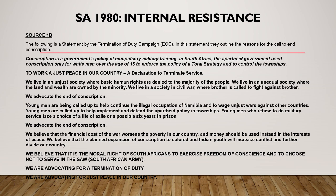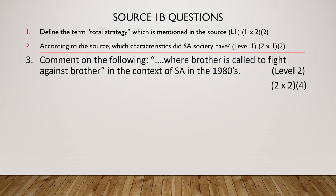Today we will be focusing on internal resistance. In front of you is Source 1B. It is important that you thoroughly read the source from beginning to end, ensuring that you understand exactly what you are reading. The source focuses on the ECC — the End Conscription Campaign. The questions that follow will be focused specifically on Source 1B. Question one: define the term 'total strategy' which is mentioned in the source. This is a level one question — it is important to know your concepts as 'total strategy' was one of the concepts discussed. Question two: according to the source, what characteristics does South African society have? This too is a level one question.